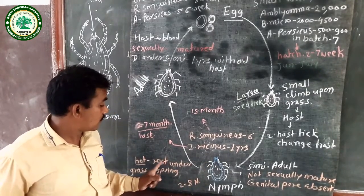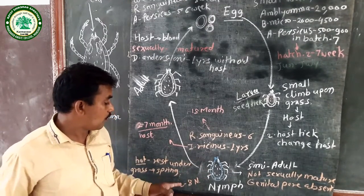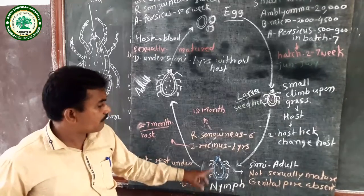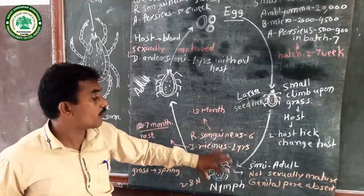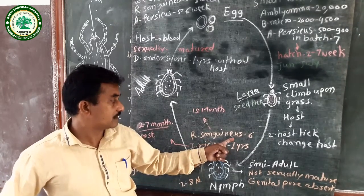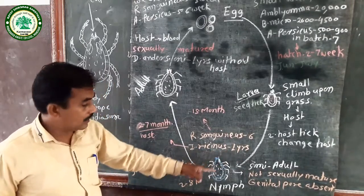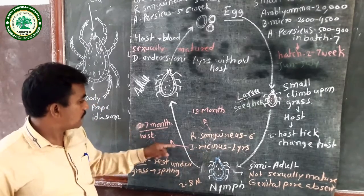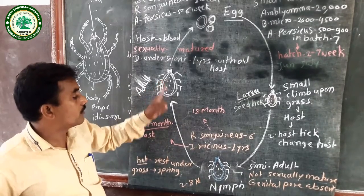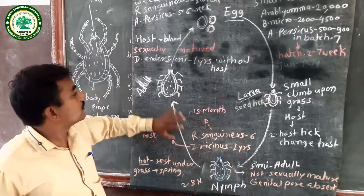Temperature is very important in the nymph state; medium temperature favors their growth. The duration of the nymph condition varies from species to species. In Rhipicephalus sanguineus, the nymph can survive up to six months; in Argas reflexus, up to one year. In R. sanguineus, development occurs after 18 months without a blood meal before converting to the adult stage.